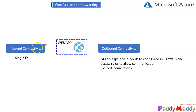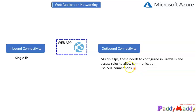For inbound connectivity, it's going to be a single static IP which will be automatically assigned by Microsoft Azure when you create the web application. For outbound connectivity, it's not just a single IP — it could be multiple IP addresses. Based on that, your web application might be built, so you must allow access to your SQL connections. If you have any firewall rules in between, you should enable those IP addresses so that the connection can be established.